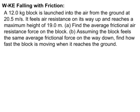Here's our example. A 12.0-kilogram block is launched straight up into the air from the ground at 20.5 meters per second. It feels air resistance on its way up and reaches a maximum height of 19.0 meters. First, we have to find the average frictional air resistance force on the block, and then, assuming the block feels that same force on the way down, we have to find how fast it's moving when it gets to the ground.